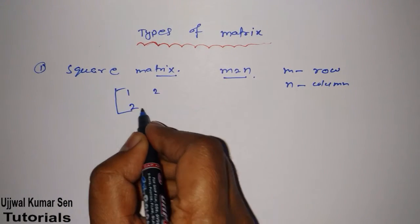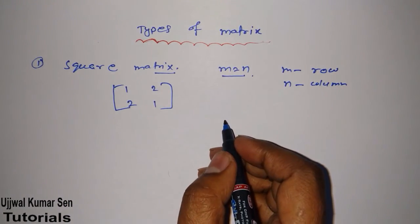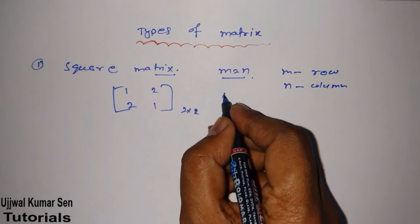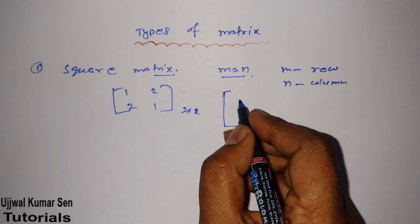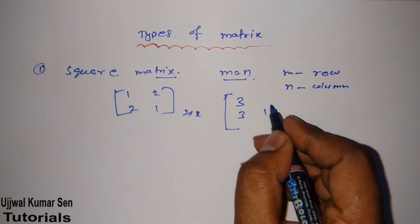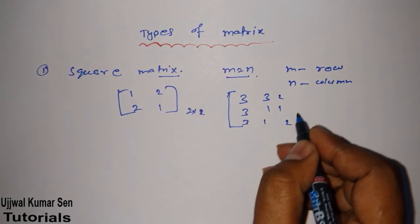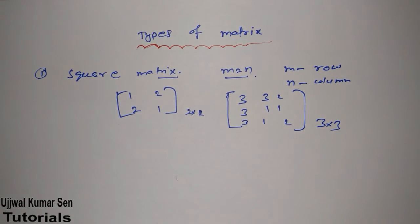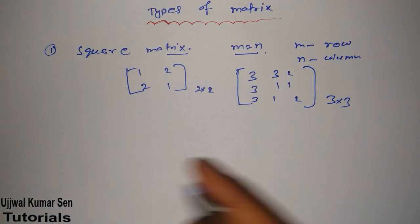1 2 2 1, this is an example of square matrix and it's 2 by 2 square matrix. If I'm talking about 3 by 3 square matrix, then 3 1 2, 3 1 3, 2 3 1. It's 3 by 3 square matrix. So this is an example of square matrix.